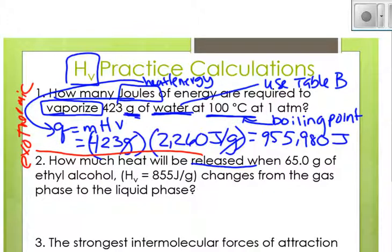We're talking about our cooling curve then. When 65 grams, grams is a unit of mass, of ethyl alcohol. See how they give you a heat of vaporization? Yes, because it's not water, so we can't use table B. So no table B here.